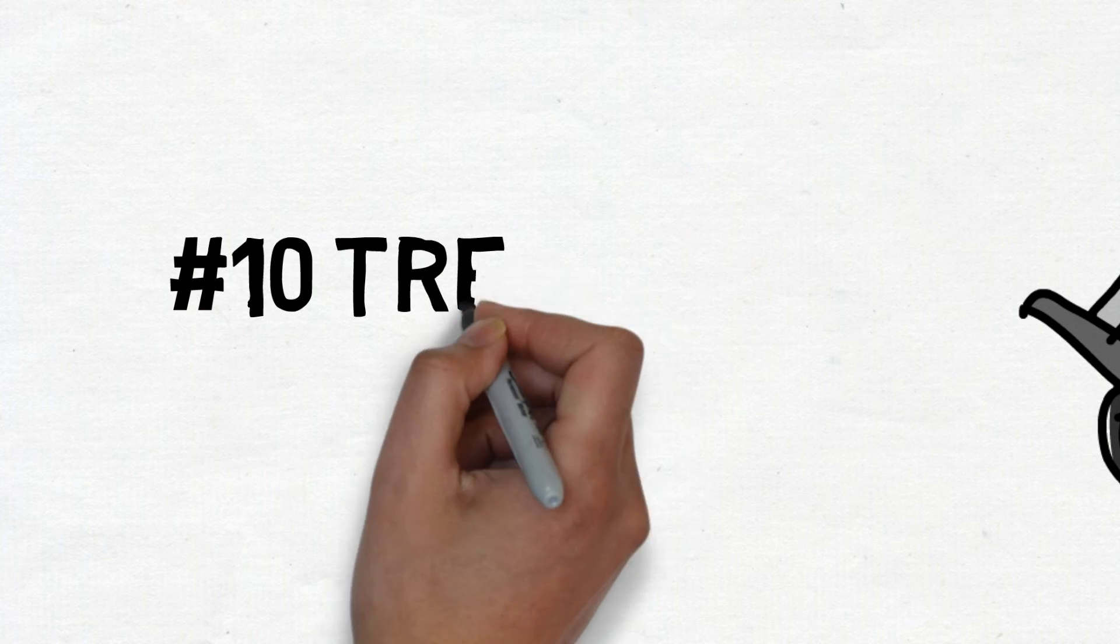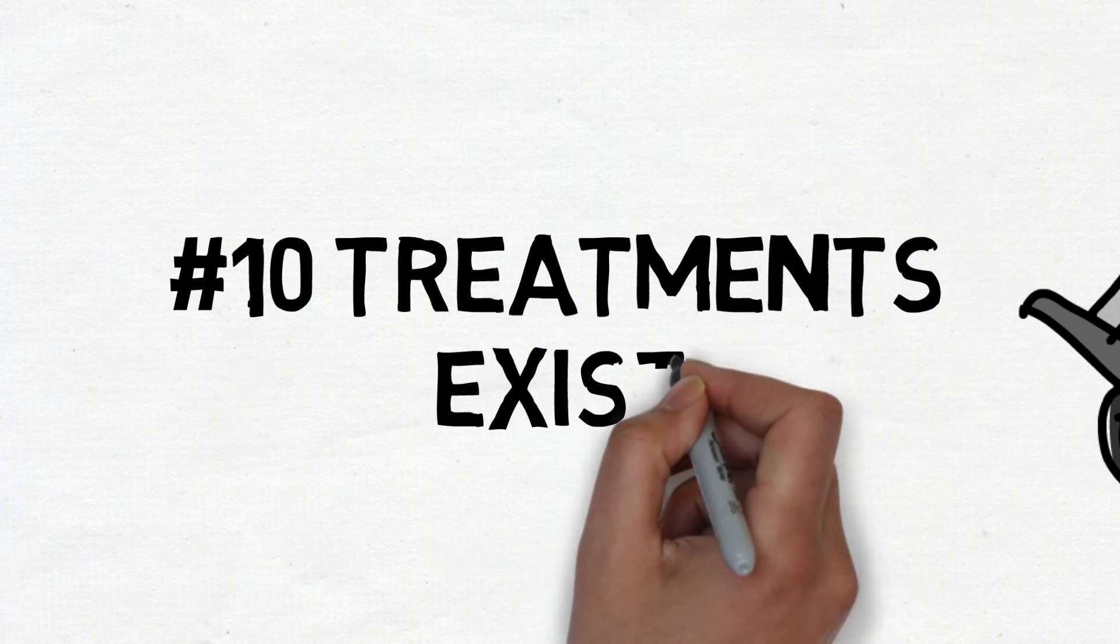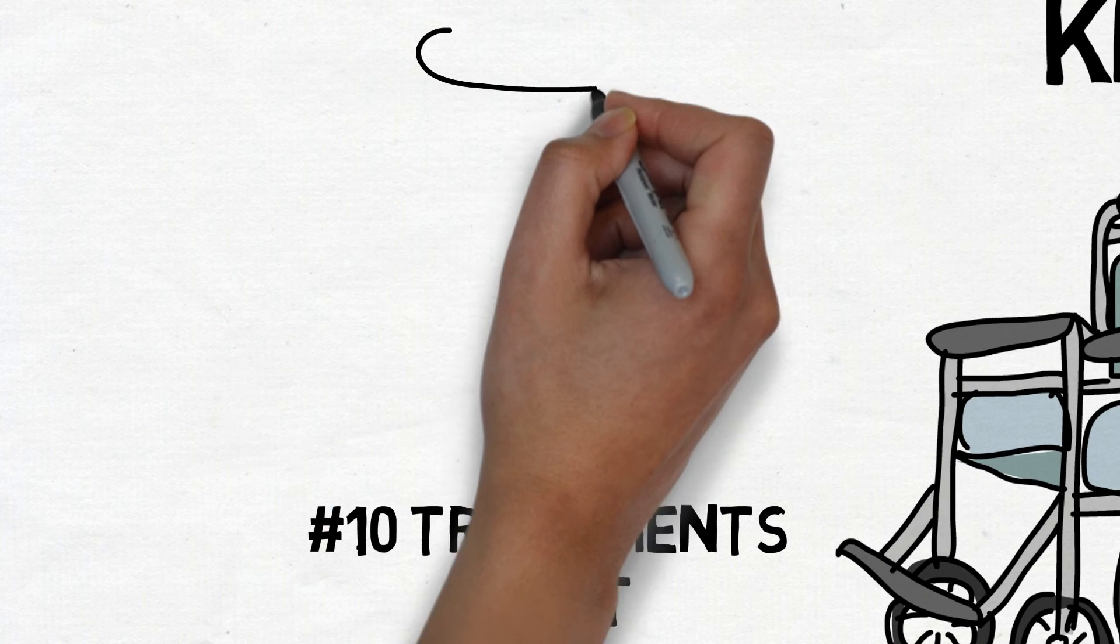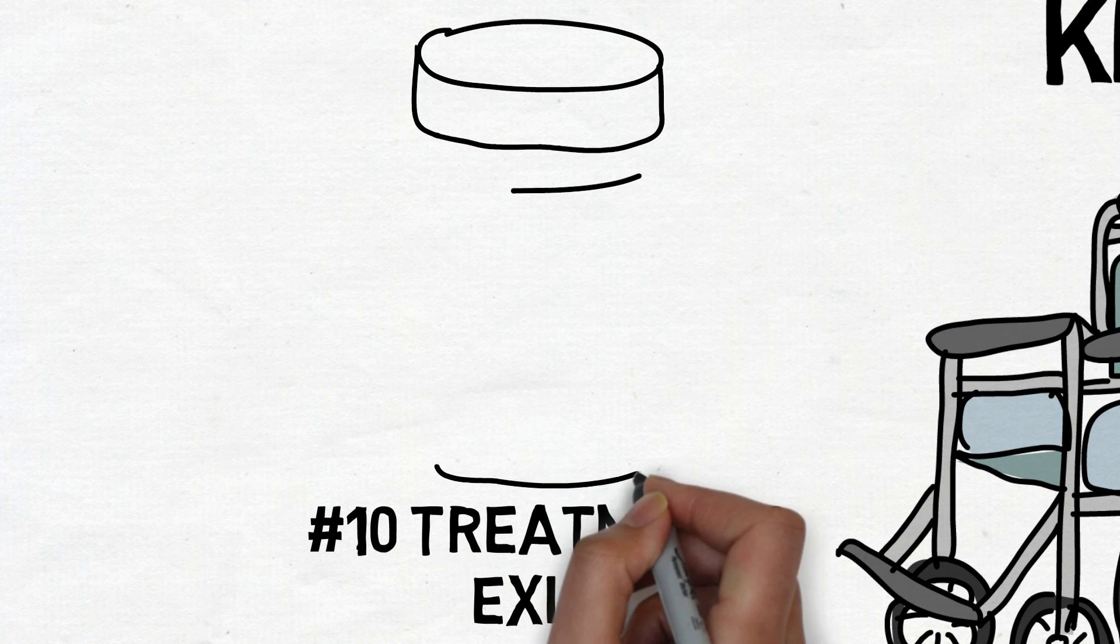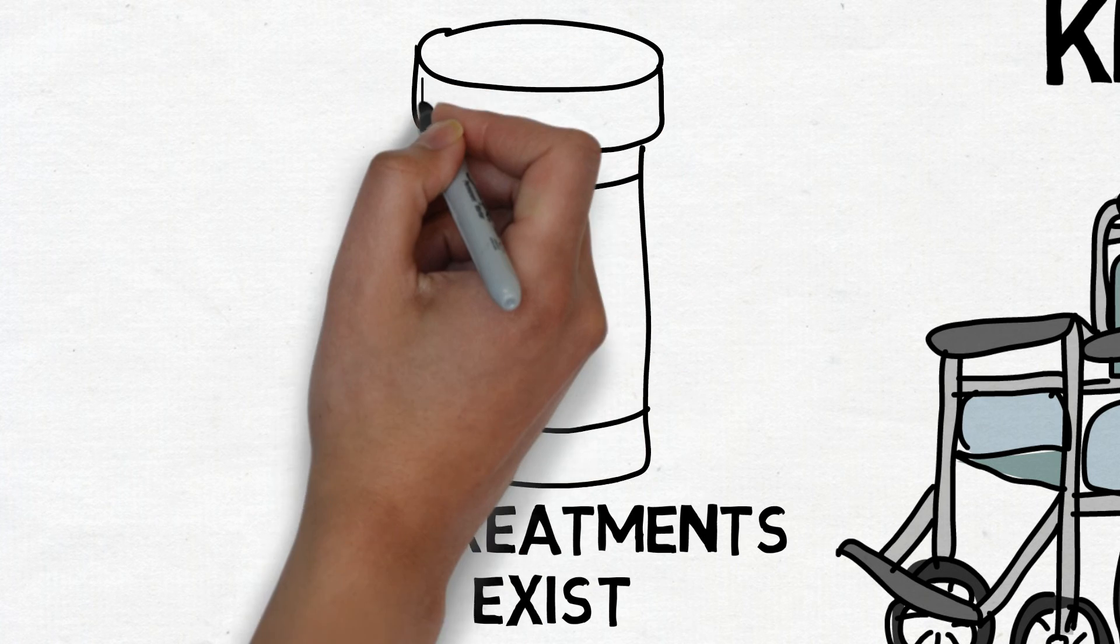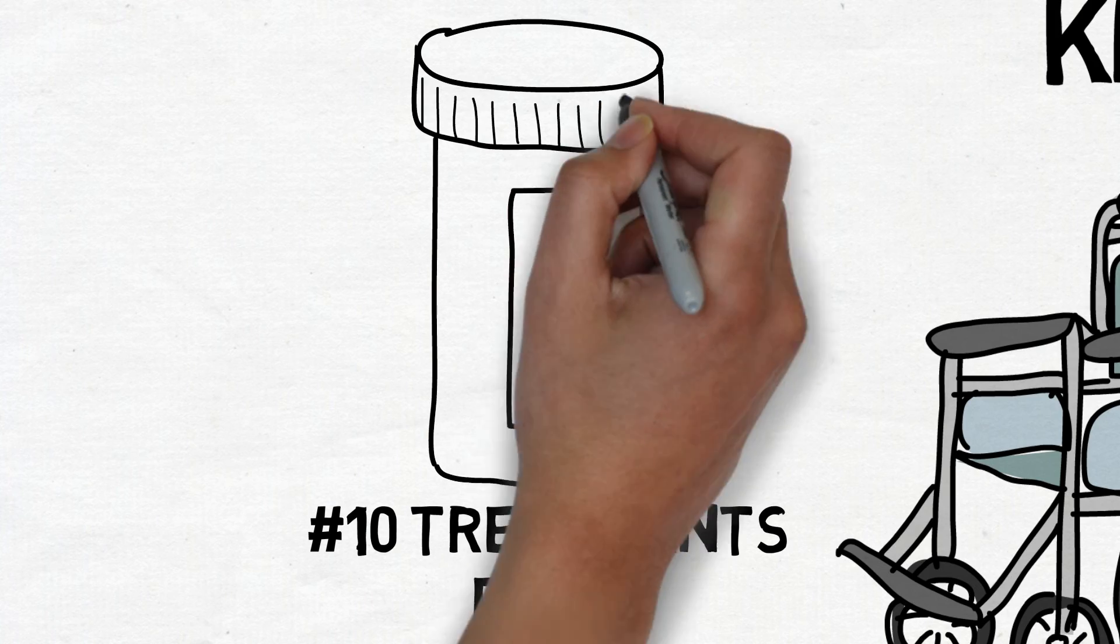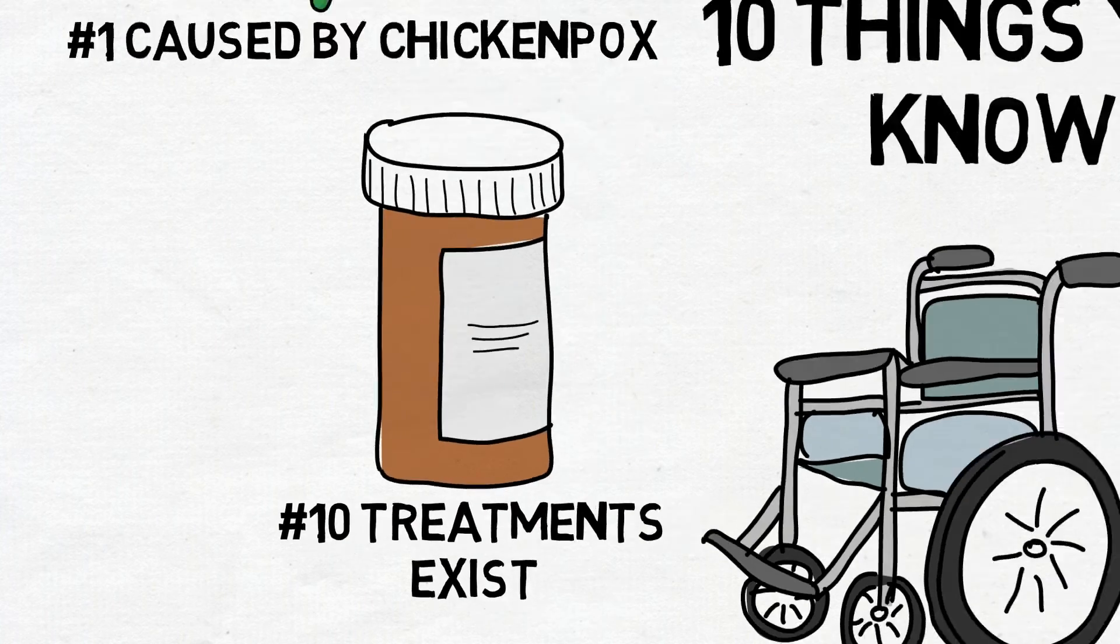Number ten: Treatments for shingles exist. Ideally, you should begin treatments within the first 48 hours. Some treatment options include prescription medications like acyclovir, famciclovir, and valacyclovir. Pain medications like ibuprofen may also be taken.